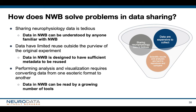In conclusion, how does NWB solve some of the problems in data sharing? Sharing of neurophysiology data is tedious — data in NWB can be understood by anyone familiar with NWB, so it helps you share data much more effectively. Data has limited reuse outside the original experiment — data in NWB is designed to have sufficient metadata to be reused, and we've already seen people start integrating others' data with their own. Performing analysis and visualization requires converting data from one format to another — NWB helps data stay within one format and benefit from a growing number of tools in the broader ecosystem.